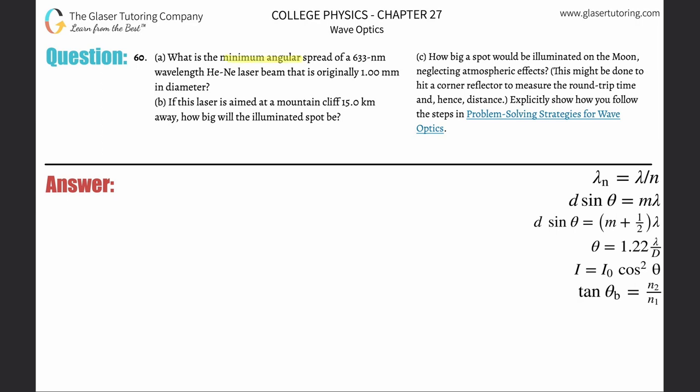Number 60, letter A. What is the minimum angular spread of a 633 nanometer wavelength helium neon laser beam that is originally one millimeter in diameter?